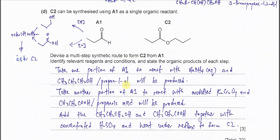Part D. C2 can be synthesized using A1. A1 is this aldehyde as a single organic reactant to form the C2, this ester. So here we roughly know that the A1 needs to undergo reduction and oxidation. If A1 undergoes reduction, it will form this propan-1-ol. If it undergoes oxidation, insert one more oxygen here to form the propanoic acid. After that, when these two products form, then it will undergo esterification to form the ester C2 here.